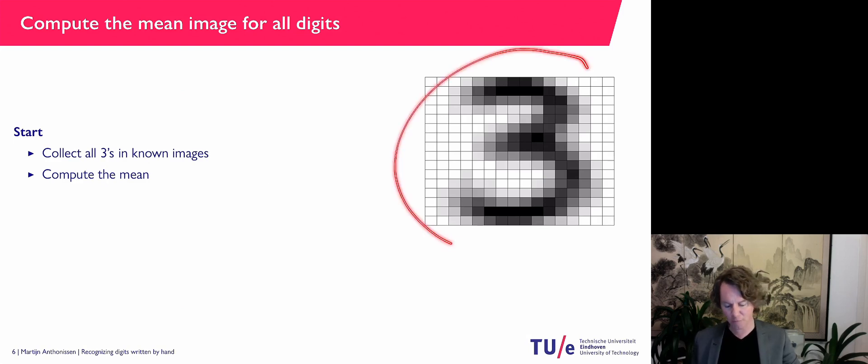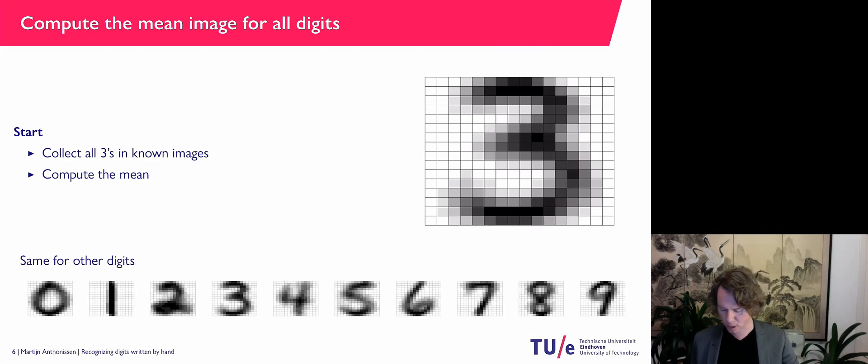And this is the average three that you find in your dataset. As you can see, it's a bit of a blurred image. That's very often with averages. So I can also do that for all the other images. And these are the mean images for every digit in the dataset.